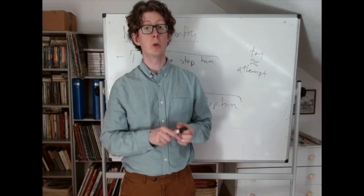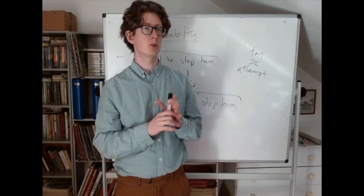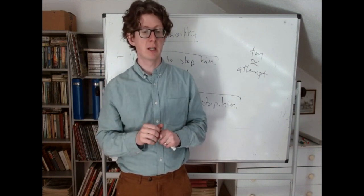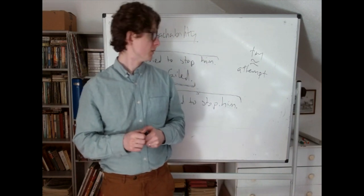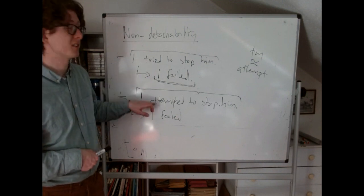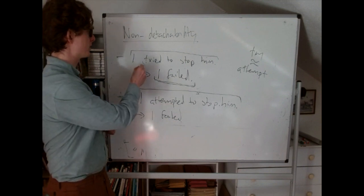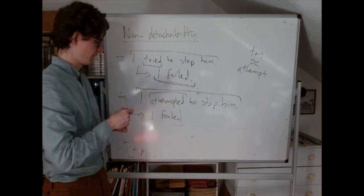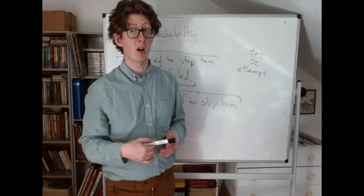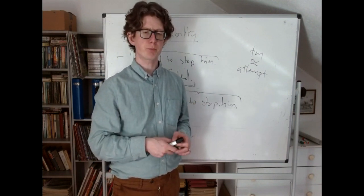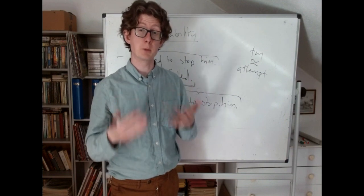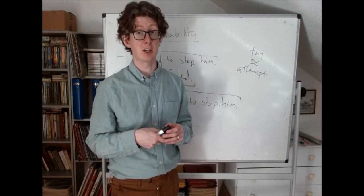Again, this is not a totally perfect test. One reason is that there are some implicatures called manner implicatures that actually do depend on the exact phrasing — we'll talk about those in the next video. Another limitation is that whether we can apply this test depends on being able to find a perfect synonym in the first place. We got lucky here because 'attempted' is a synonym for 'tried.' But if we're using a word that has no other synonyms, we just won't be able to apply the non-detachability test. It's not that the test gives the wrong verdict — it's just that sometimes it can't be applied.